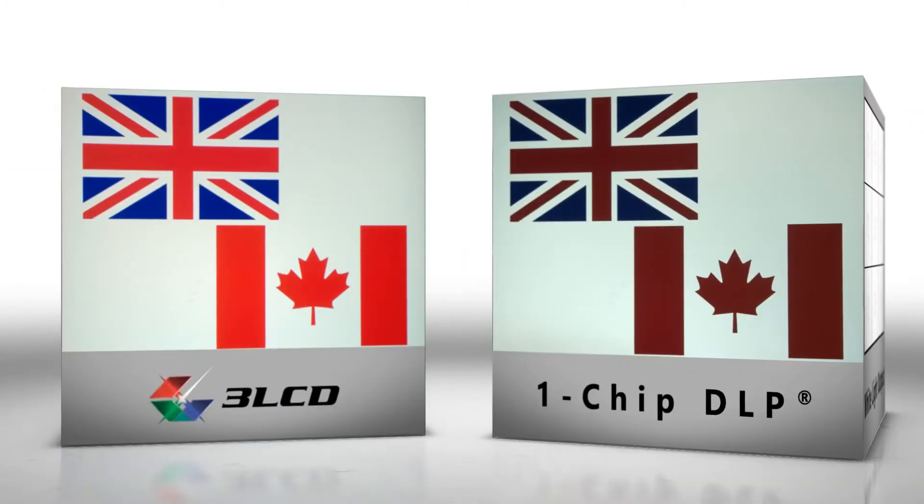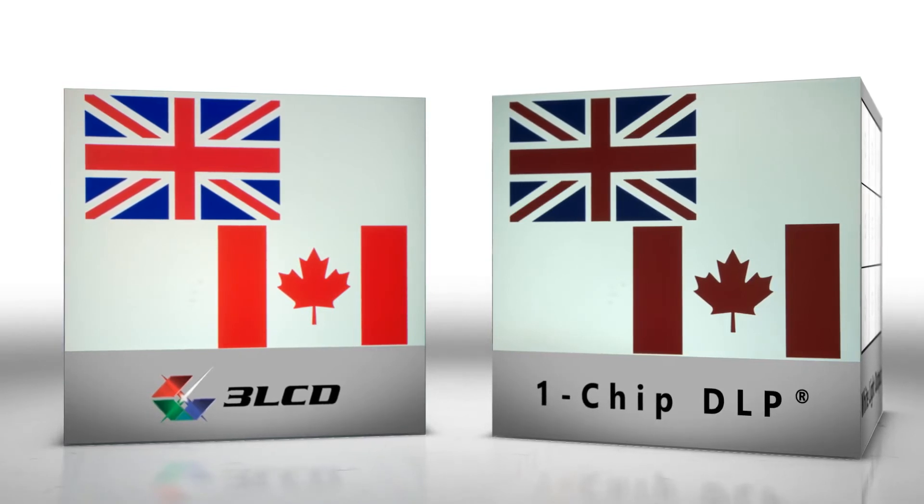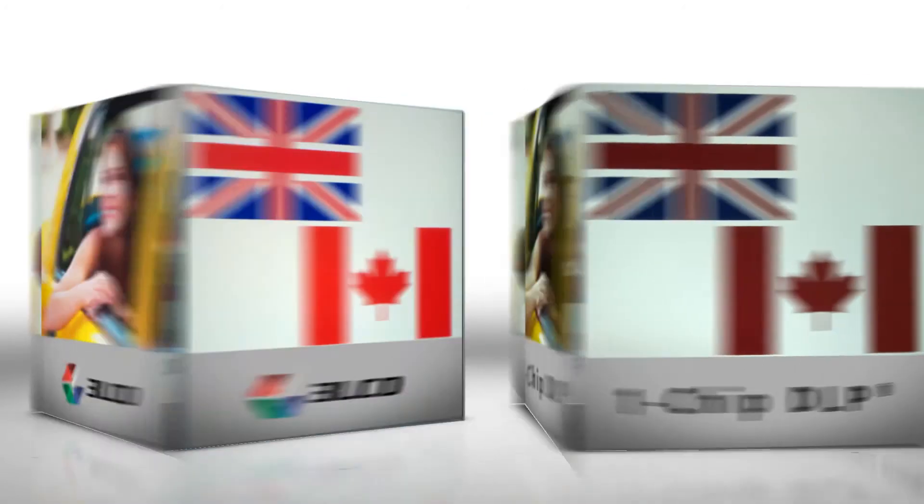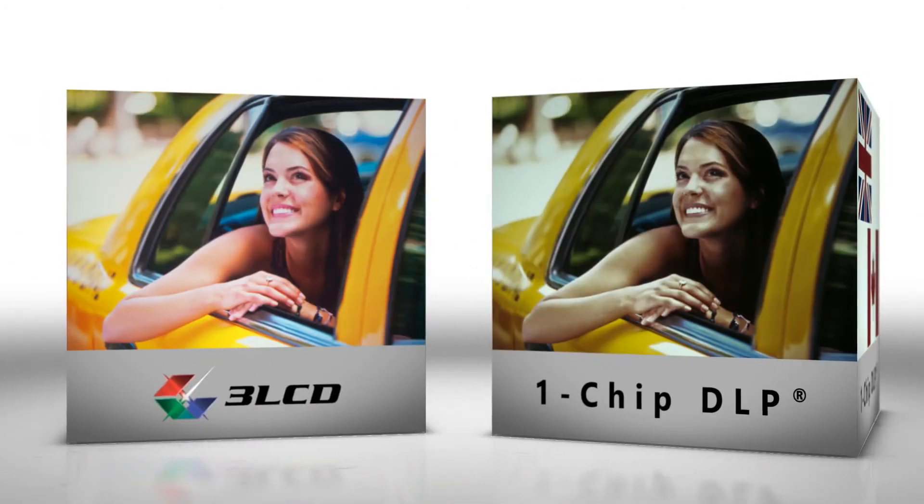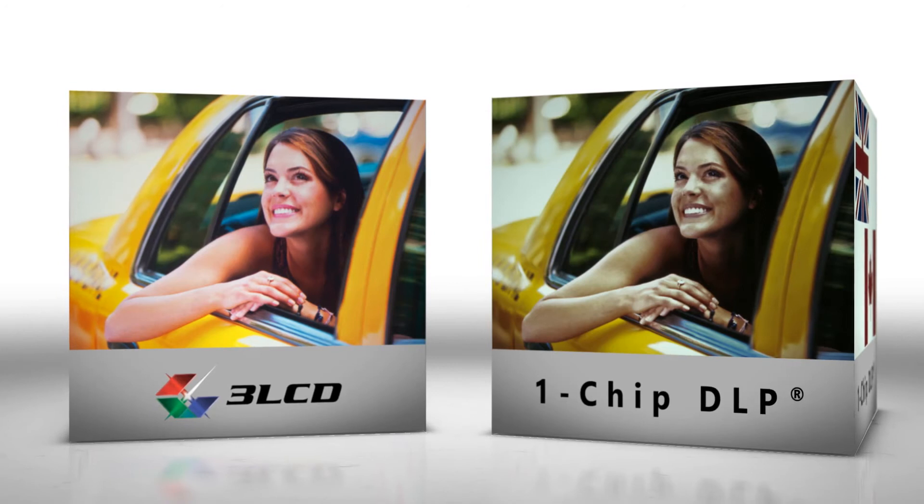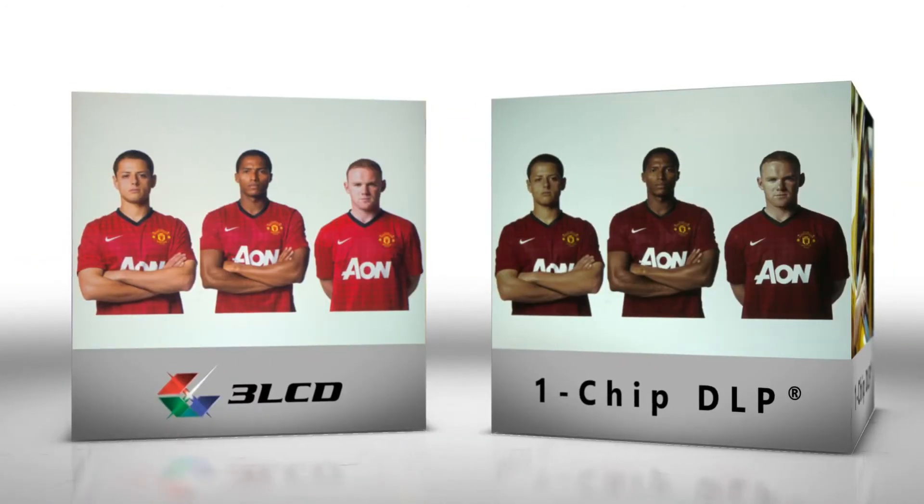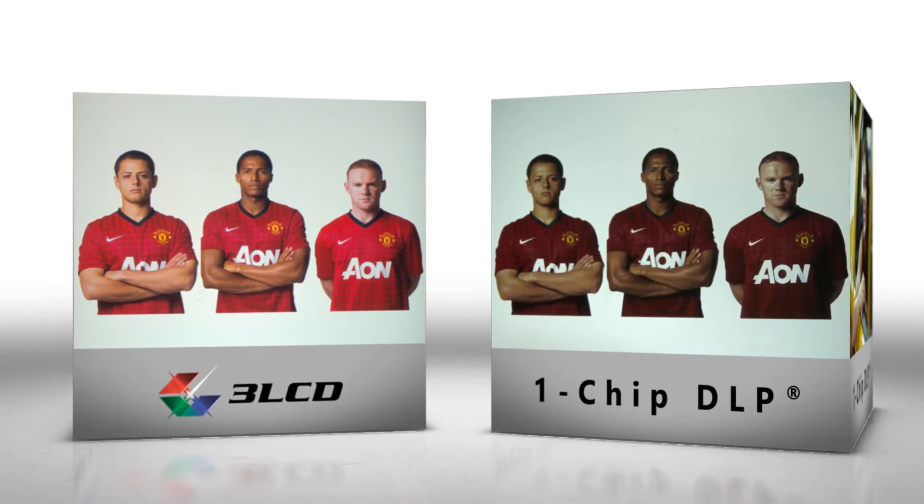These are photographs from comparable projectors. A 3LCD-based system is on the left. Here, color brightness is equal to white brightness, so colors appear rich and balanced. On the right is a one-chip system with a clear segment. Here, white brightness is higher than color brightness, so images look dim and dull.